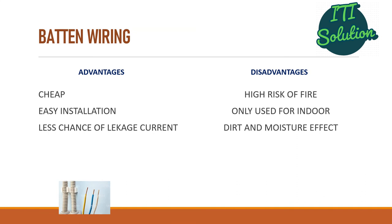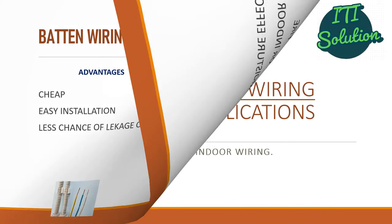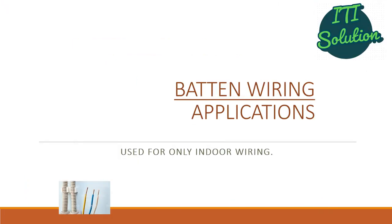Advantages of batten wiring are that it is very cheap, easy to install, and has less chance of leakage current. Disadvantages include high risk of fire, only used for indoor, and affected by dirt and moisture. The application of batten wiring is that it is used for indoor wiring only.